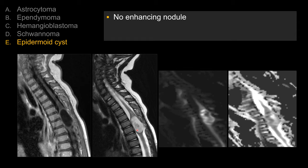On T2-weighted image, there's a cystic expansion. On diffusion-weighted sequence, you see bright signal on DWI and dark signal on ADC — so there's restricted diffusion and cystic expansion without enhancement. The best answer here is epidermoid cysts.